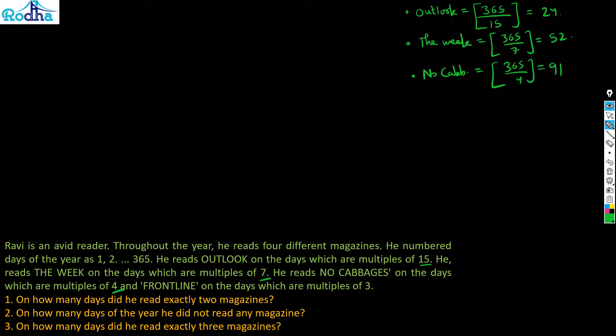For Frontline (multiples of 3): 365 divided by 3 = 121 days. Now, once you have these numbers, you can think of making a four-parameter Venn diagram, but let's learn a new approach.